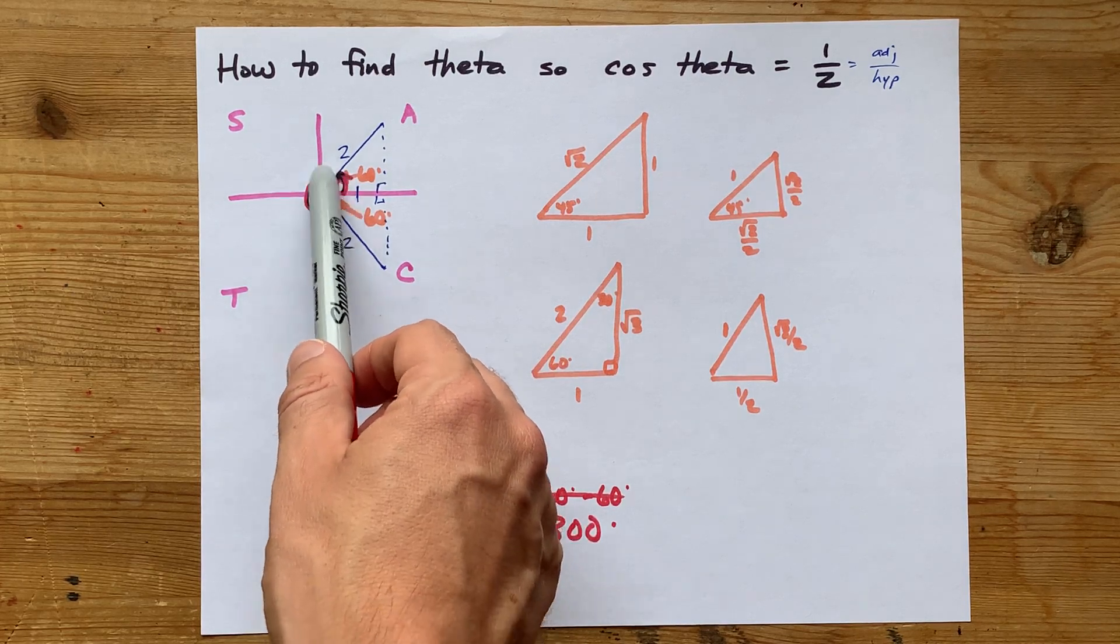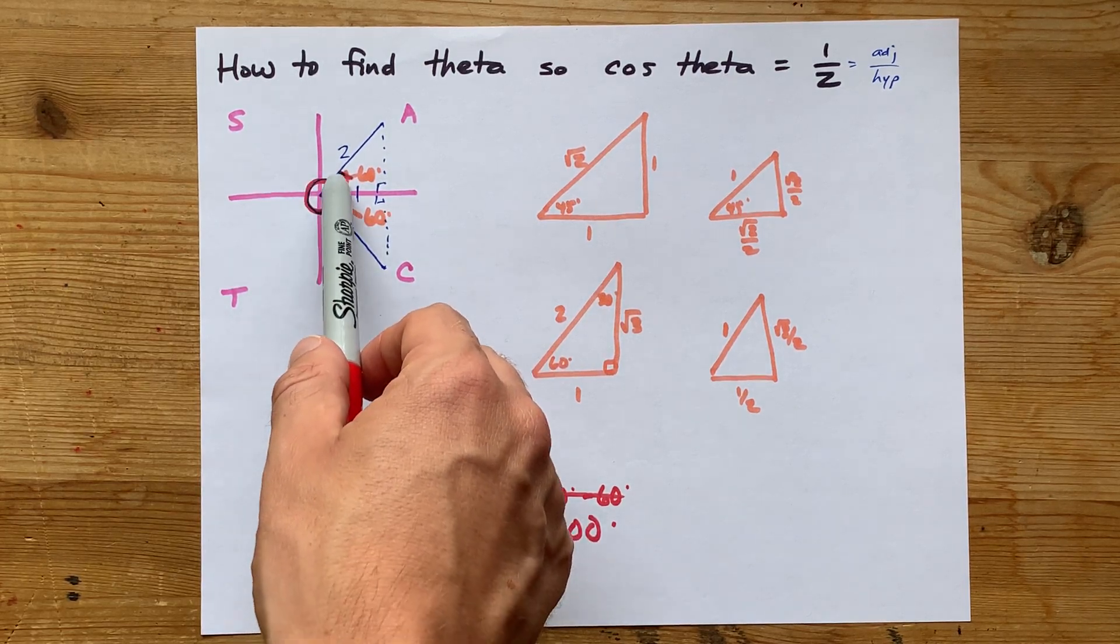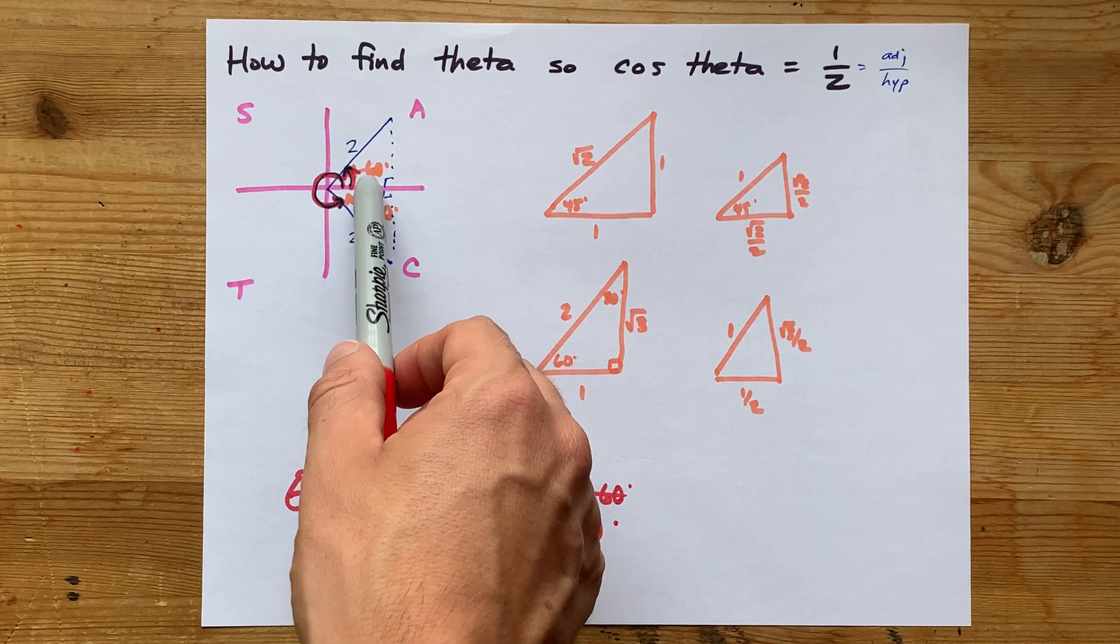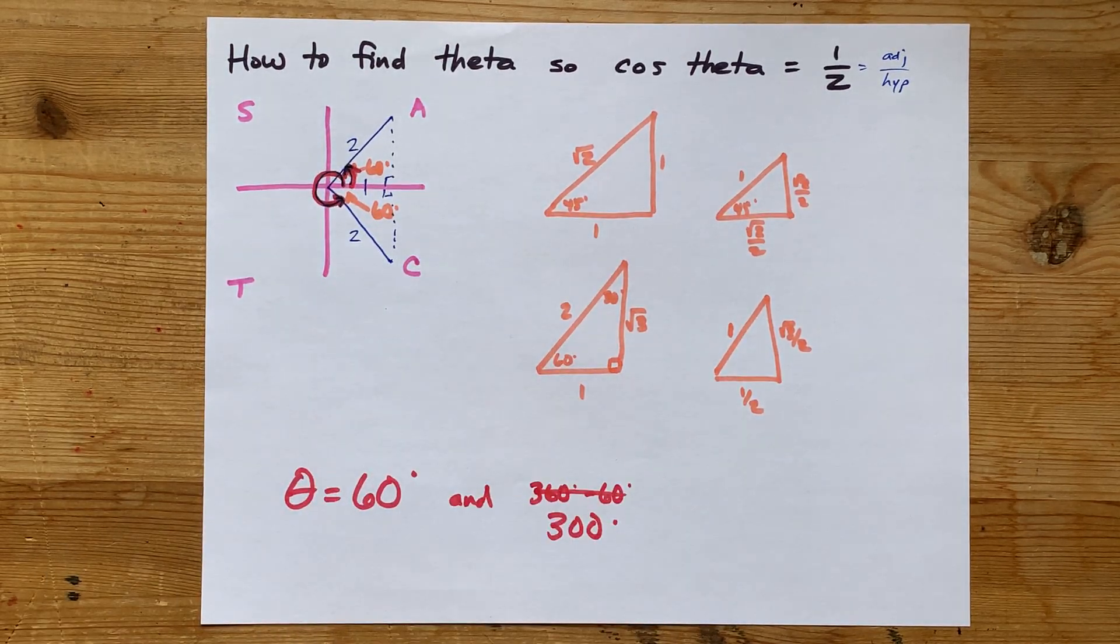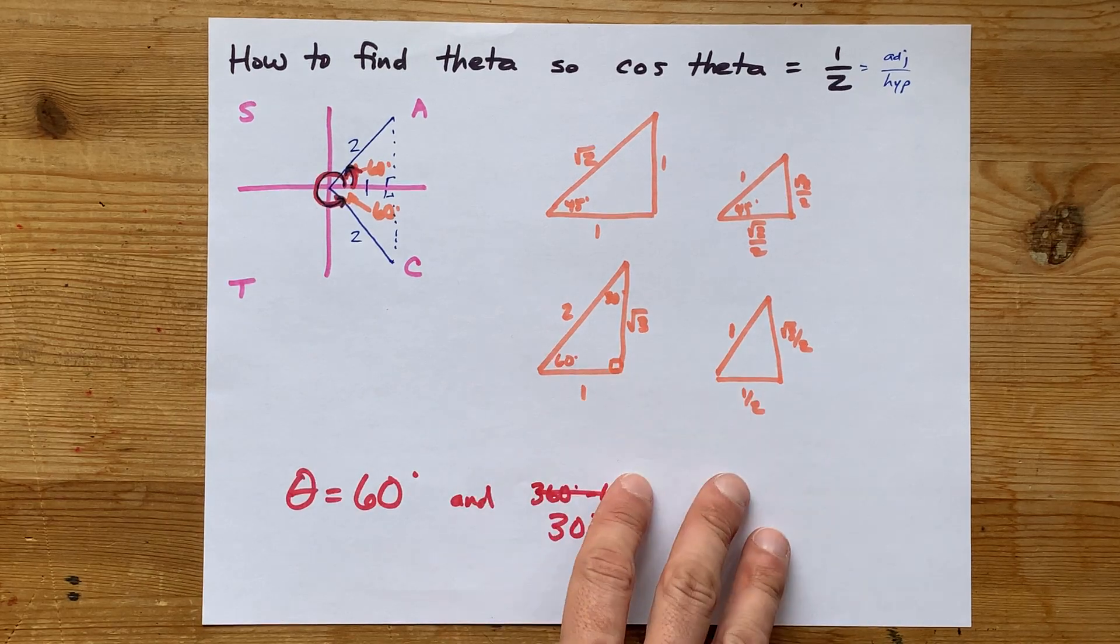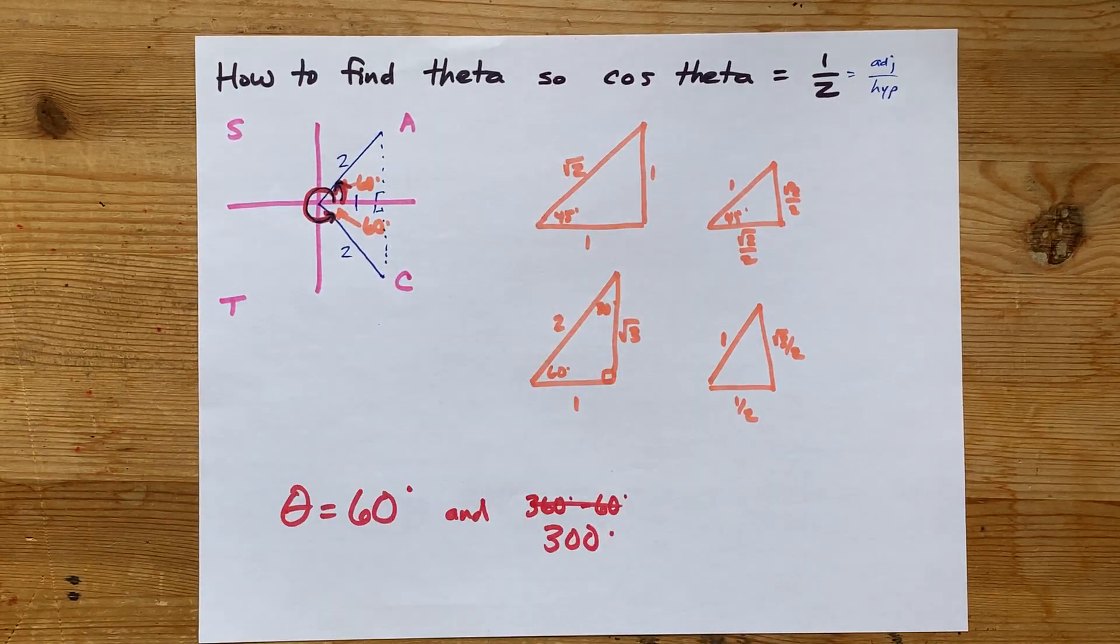And then your last bit is to figure out how large the angles are that actually lead your terminal arms to land where they do. Hope that made sense. Thanks for being with me, and best of luck.